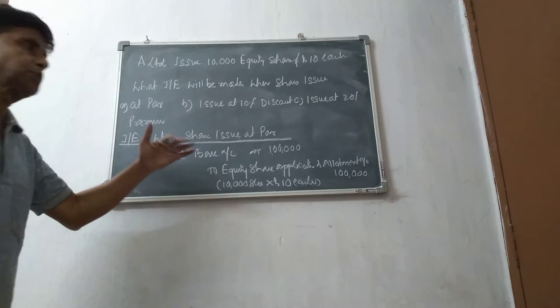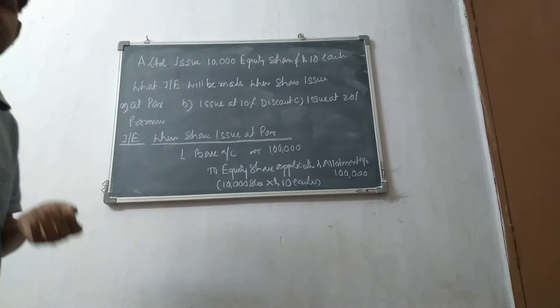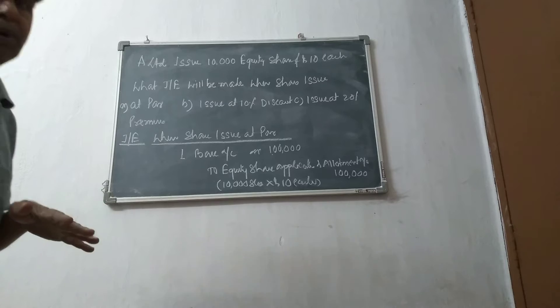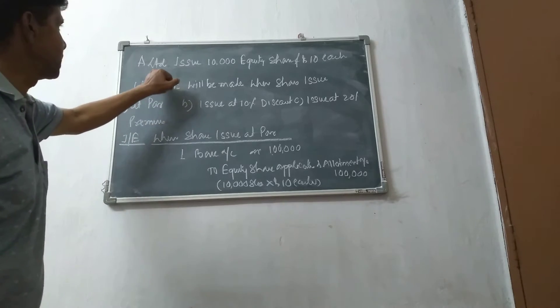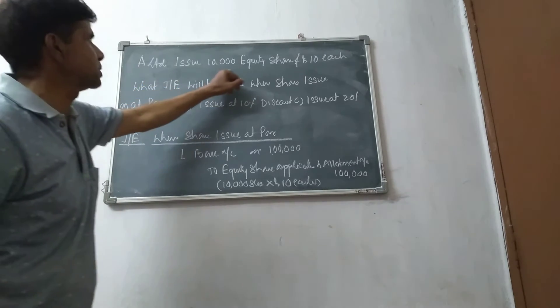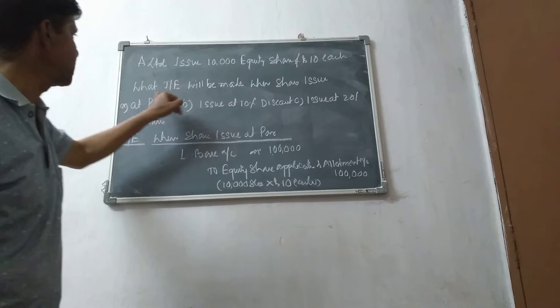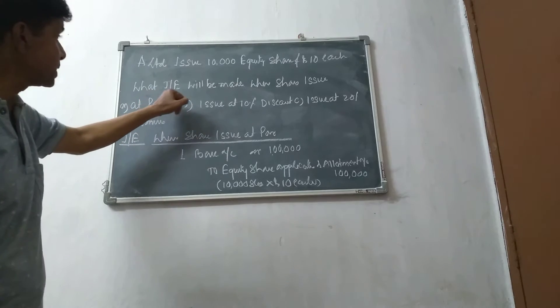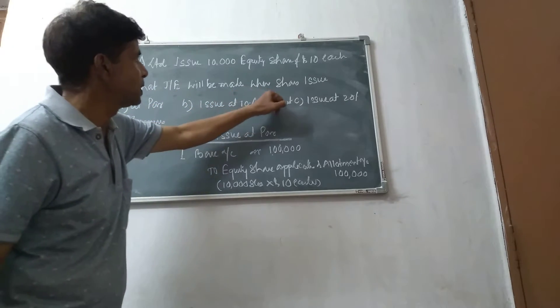Dear students, let me ask you a small question. 4 numbers, 5 numbers — that's a company. A limited issue of 10,000 equities. What journal entries will be made?